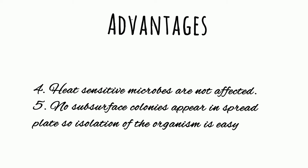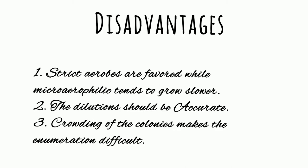When we talk about disadvantages, the first is that only strict aerobes are favored; micro-aerophilic organisms tend to grow slower. Also, the dilution must be accurate so that colonies are spaced at a proper distance, making them easy to isolate and count. Sometimes we face problems like crowding, where colonies get very crowded and enumeration becomes very difficult.